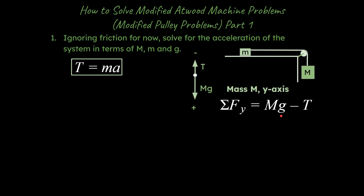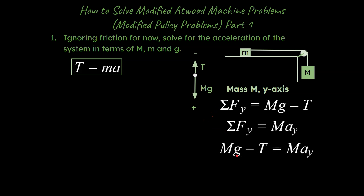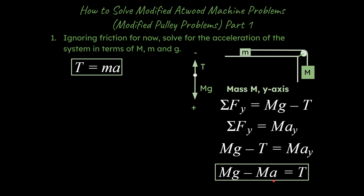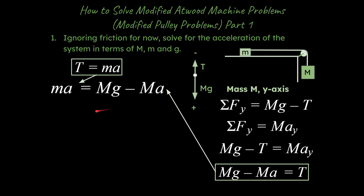Using the sum of the forces strategy in the y-axis for big M: sum of forces in y equals big M times g minus T, because tension is heading upwards. Newton's second law gives us sum of forces in y equals mass times acceleration. Setting these equal: Mg minus T equals big M times a. Notice I've now solved for tension from the little m equation and also from the big M equation. There are two key things about these problems: the accelerations are the same, and the tensions are the same. So I'm going to set the two tensions equal to each other.